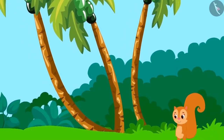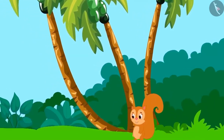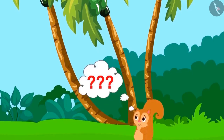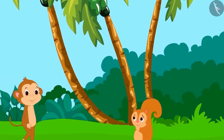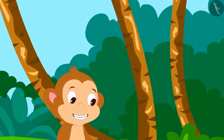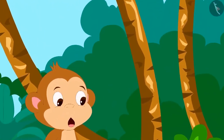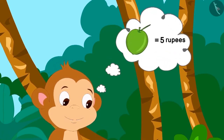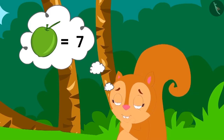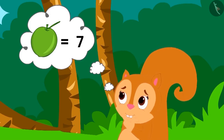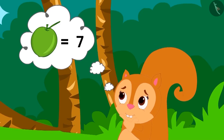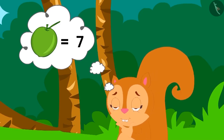Now, Chanda had to pick coconuts from a coconut tree. But the tree was very high. Therefore, she called Babban for help. Babban told Chanda that he would take five rupees for picking each coconut. Chanda had to get a total of seven coconuts picked. Now, Chanda is thinking, how much money will she have to pay to Babban?